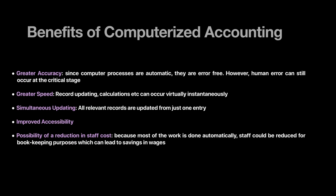The obvious benefits of computerized accounting include greater accuracy — these packages operate with more accuracy and the chances of errors are reduced. There is also greater speed, as everything can be updated and calculated instantly. Simultaneous updating means all records are updated from a single entry, so one correction will update all records at once.